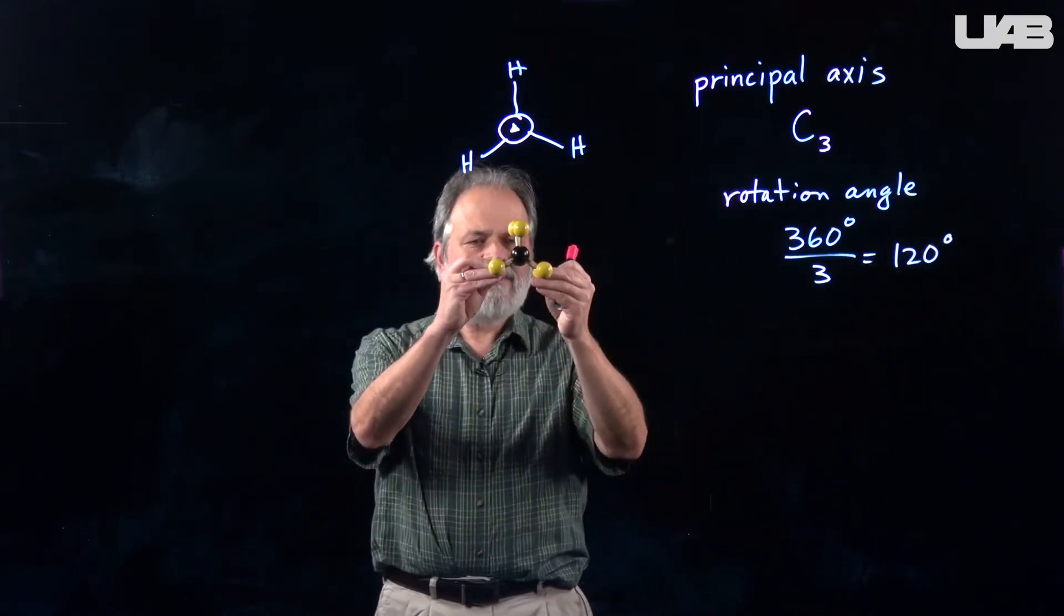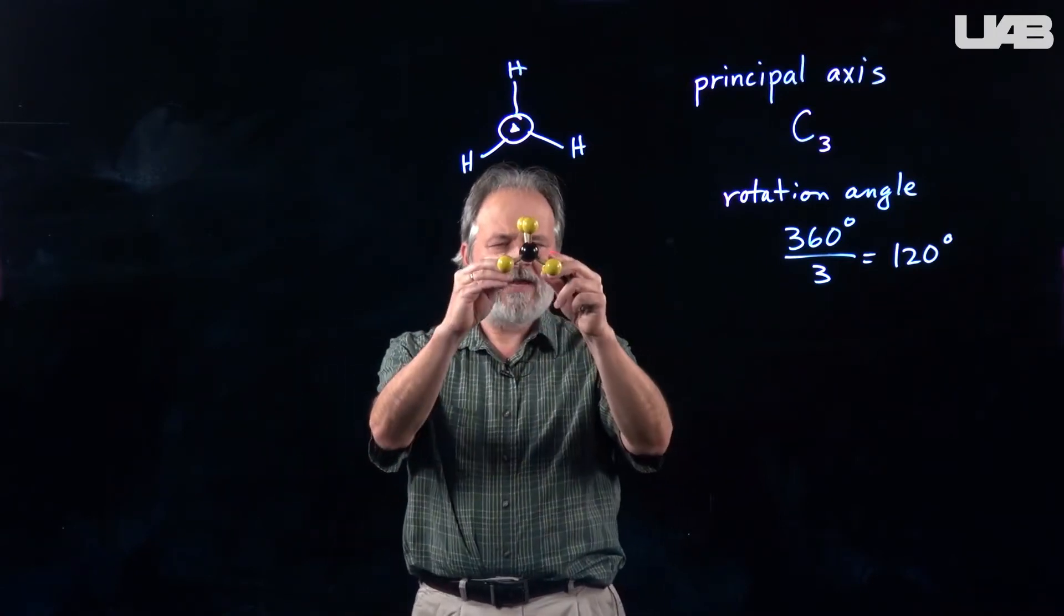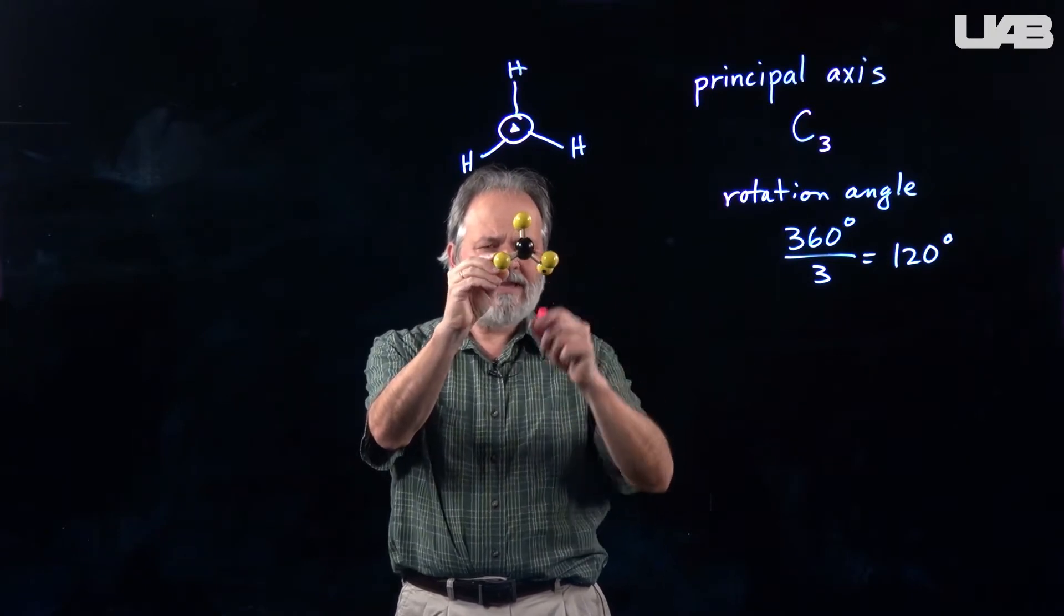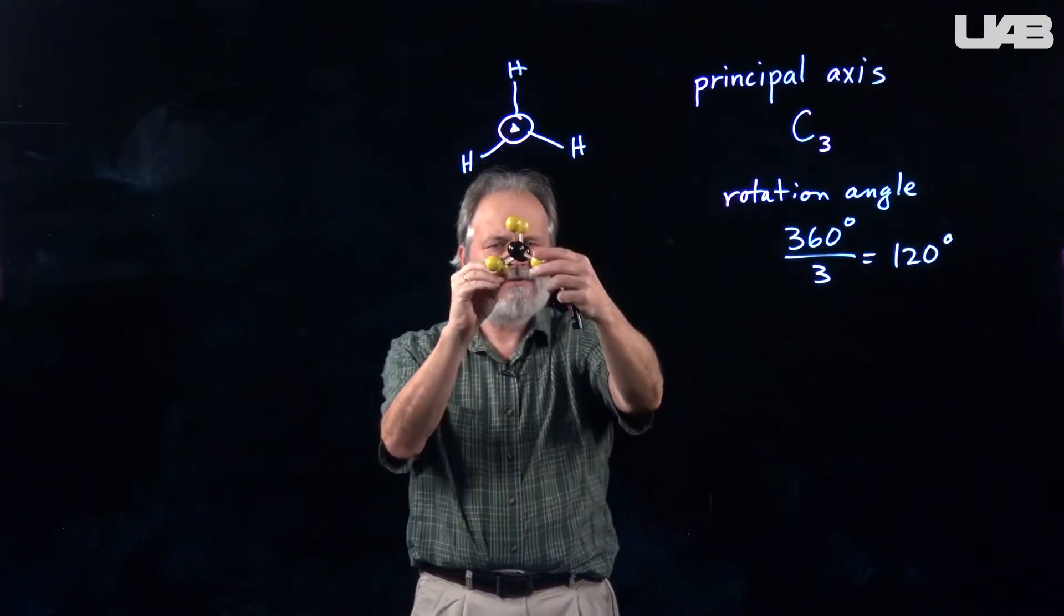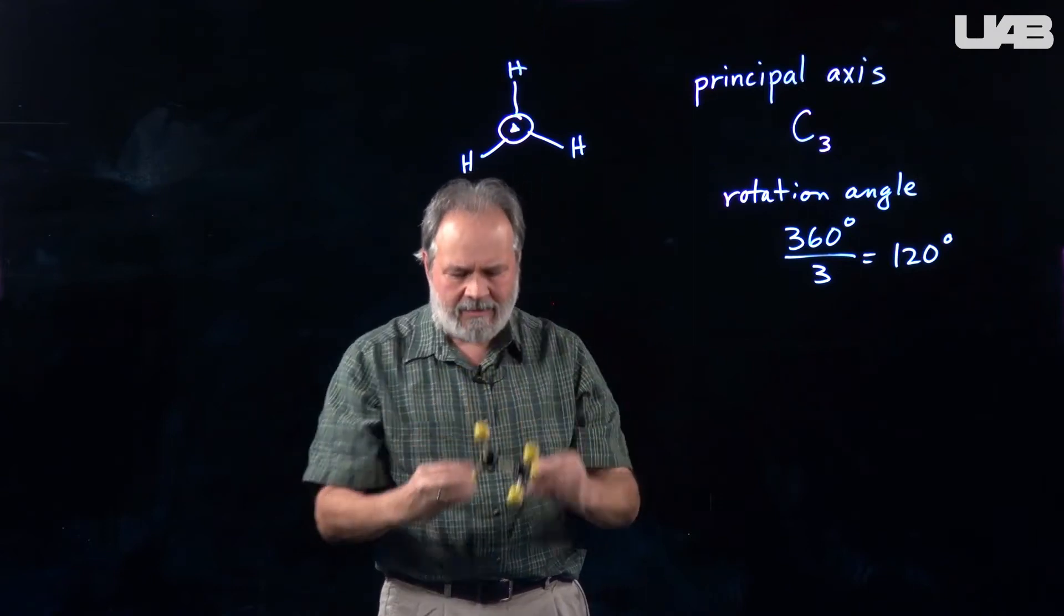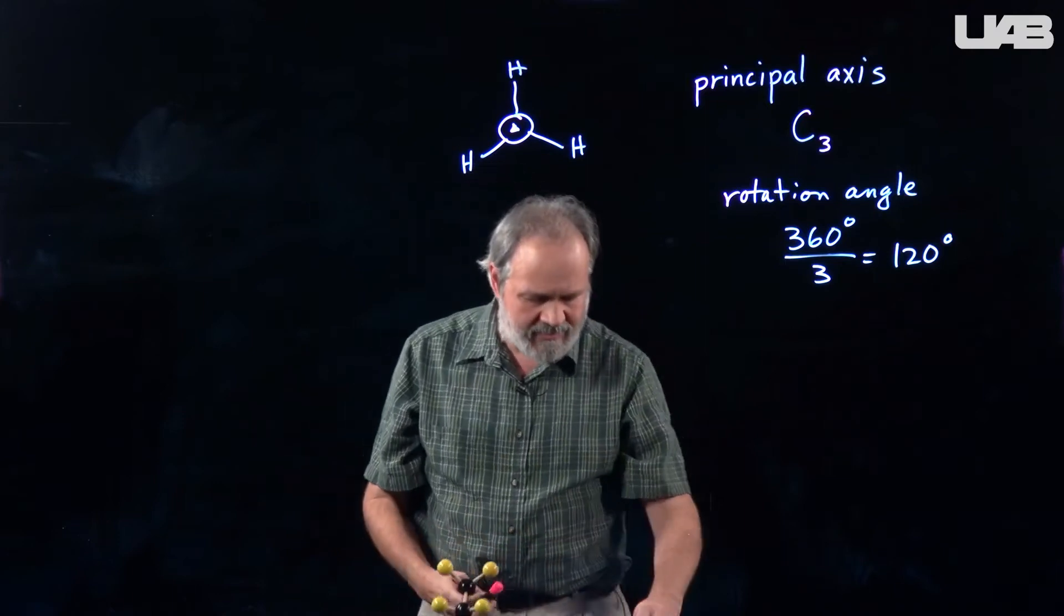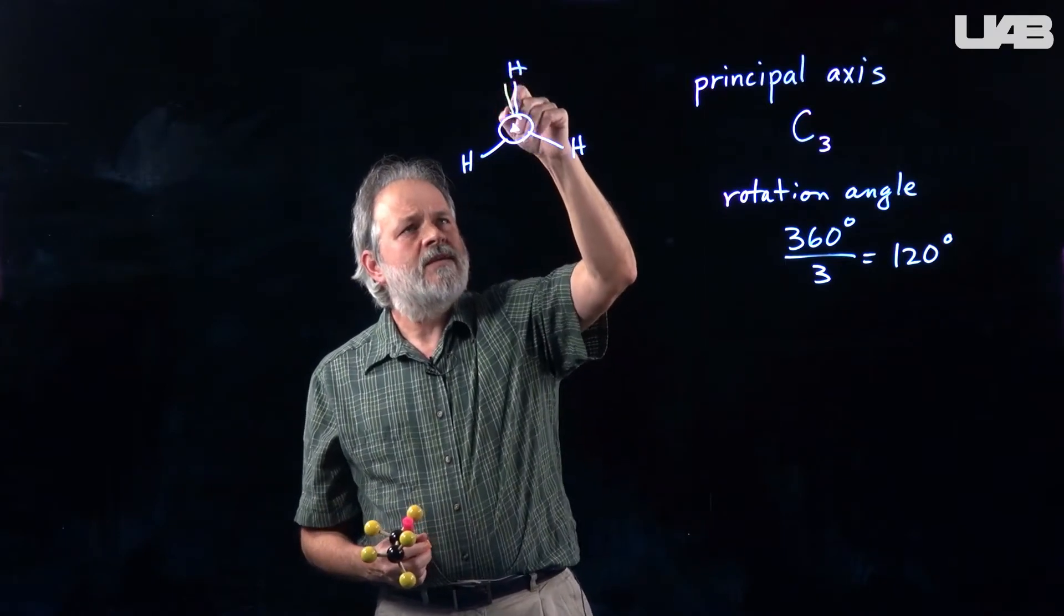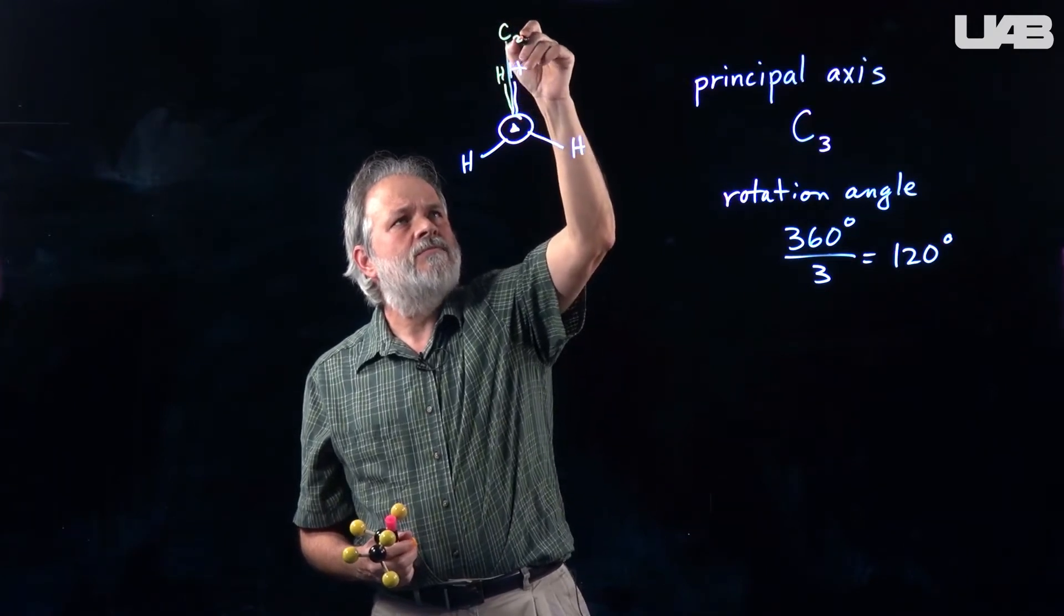So we've identified a principal axis. There is no other C3 axis in this molecule. However, the flow chart asks, well let's look for some other axes of rotation. And there is one right here. So we can take the molecule and rotate it about a vertical axis and get the same molecule back. And since we rotate it two times, that will be a C2 axis. So between these eclipsed hydrogens, there is a C2 rotation axis.